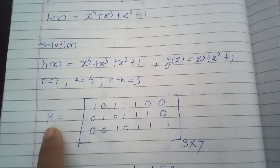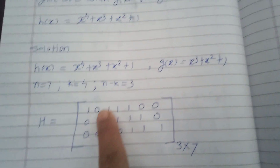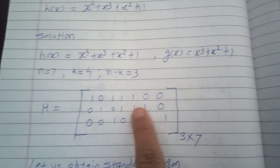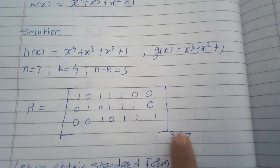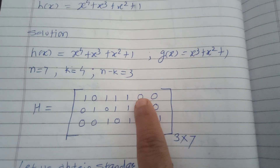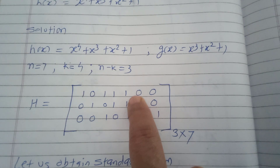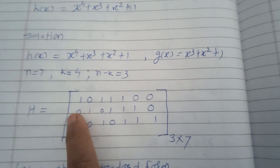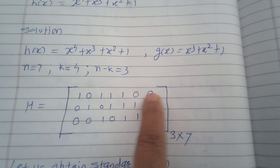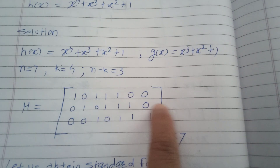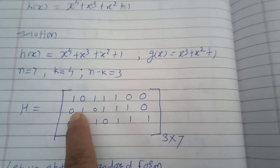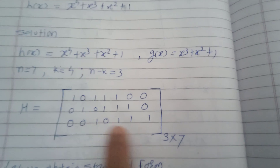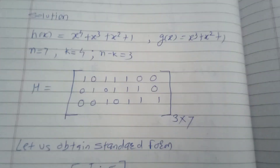To write H from h(x), the first row is: coefficient of x⁰ is 1, x¹ is 0 (not present), x² is 1, x³ is 1, x⁴ is 1. The H matrix has 7 columns and 3 rows. The first row fills 5 columns; insert two zeros for the remaining columns. Then cyclically shift the first row by one bit to get the second row, and shift the second row by one bit to get the third row.